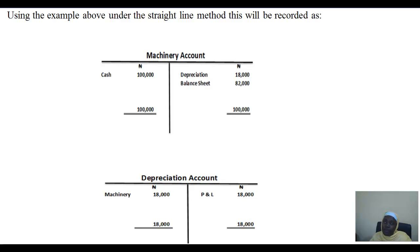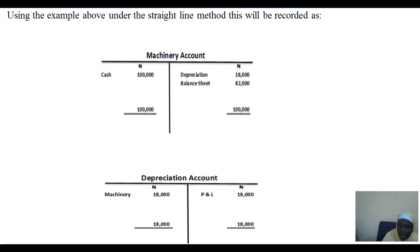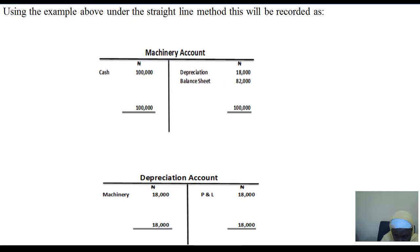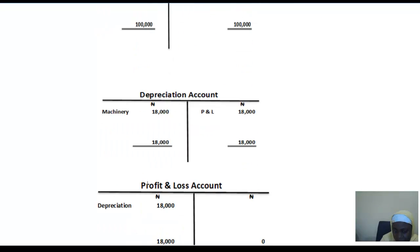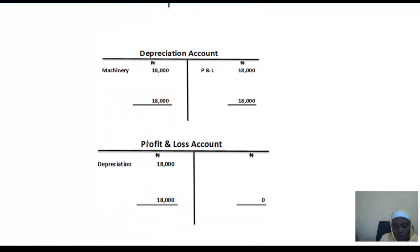That applies if you are presenting your account using the T-account format. If you are using the vertical format, it is a different format and you do not need to open the ledger account. When we solve the example question, you will see, because we will be using the T-format — though you are allowed to use either the T-format or the vertical format. That is all about depreciation for fixed assets; you will understand it better when we solve an example.